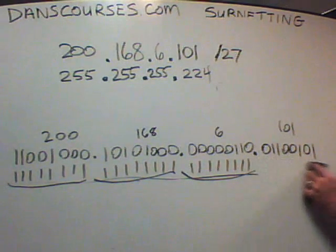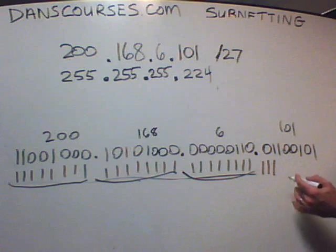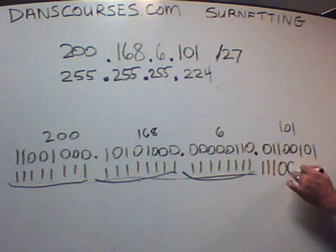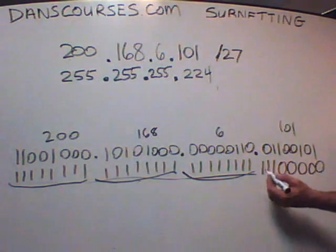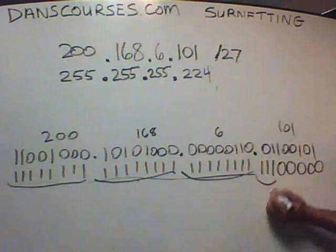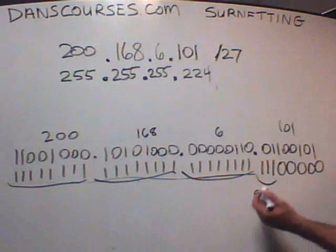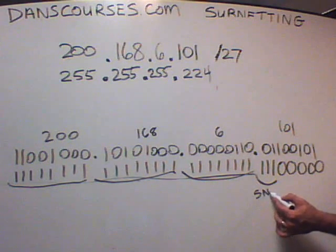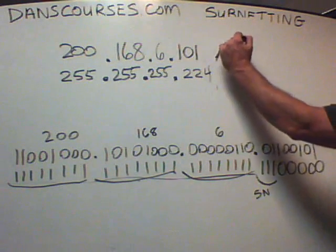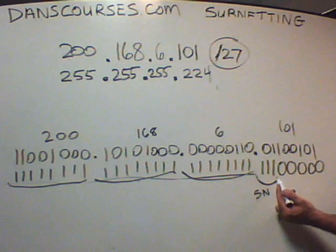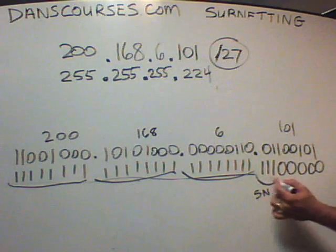We're going to borrow bits from the host portion — borrow three bits and convert them to ones. We've now added three more ones. These three ones are your subnet bits, your net mask bits. The borrowed bits converted from zeros to ones are subnet bits. If you count all the ones going from left to right, we now have slash 27, or 27 ones.